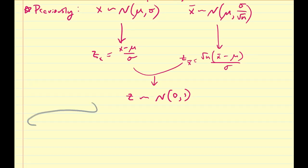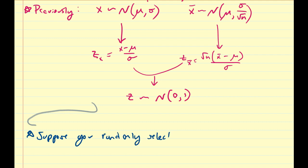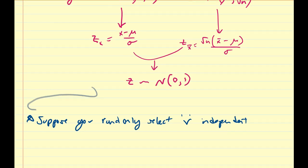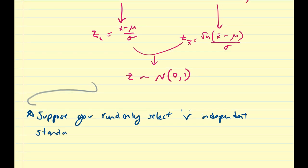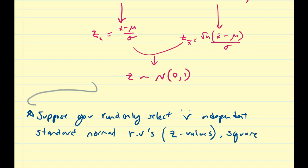So let us introduce another variable. Suppose you randomly select nu new independent standard normal distribution variables, namely z-values. Once you select them, square them, then add up the squares.